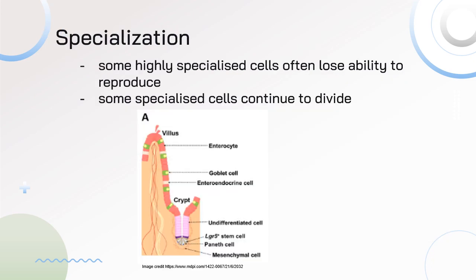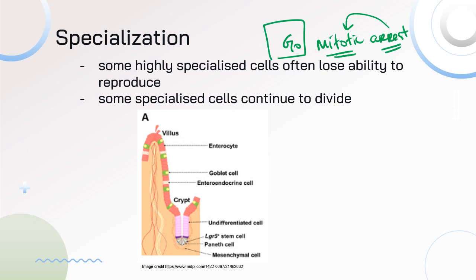Once we have those cells specialized, they often lose their ability to reproduce. Brain cells, nerve cells, and muscle cells — once specialized — can no longer go through mitosis. What we've got is what we've got. We could have stem cells come in and replace those specialized cells, but those cells cannot divide. We call this G0 or mitotic arrest — arrest means to stop — so mitotic arrest is stopping mitosis and those cells just aren't reproducing.